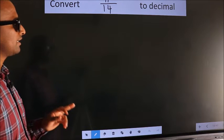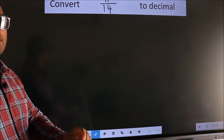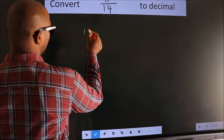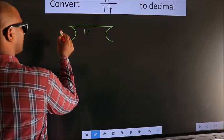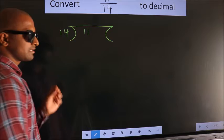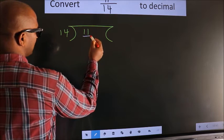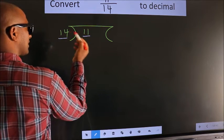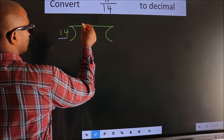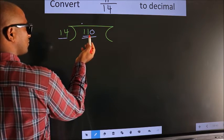To convert 11 by 14 to decimal, we have to divide. We frame it with 11 here and 14 here — this is step one. Next, 11 is smaller than 14, so we put a dot here and take zero, making it 110.